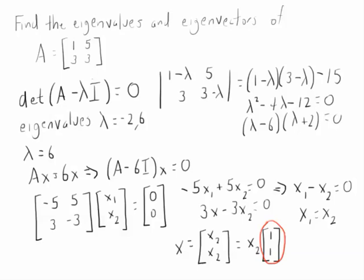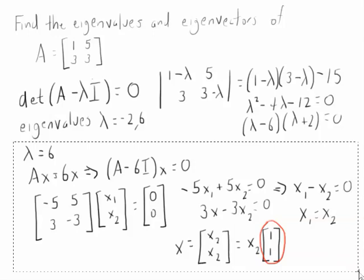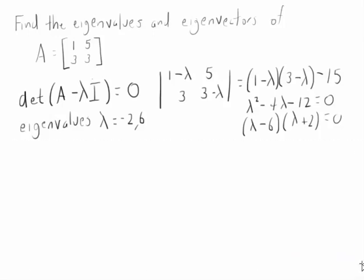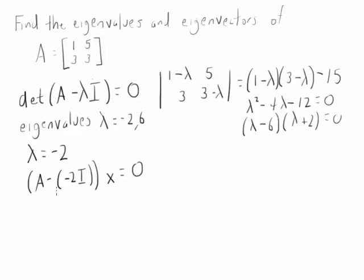Let's do that again with the other eigenvalue. So now we have lambda equals negative 2. So we've got A minus a negative 2 times I times X equals 0.